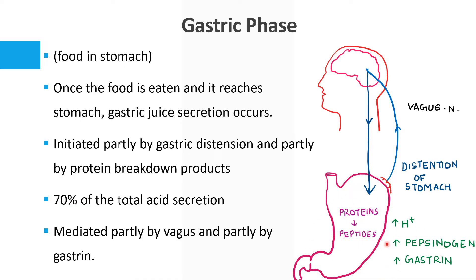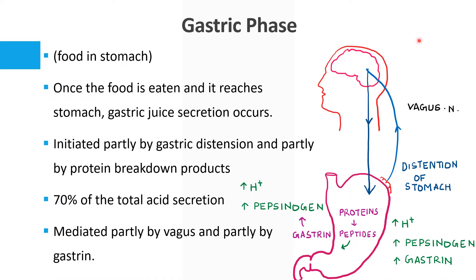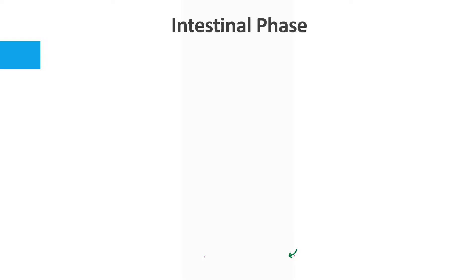Due to digestion by pepsin, proteins are converted to peptides. These peptides stimulate the hormone gastrin, which in turn increases H+ as well as pepsinogen. So the gastric phase is mediated partly by vagus — activated by gastric distension — and partly by gastrin, activated by protein breakdown products.